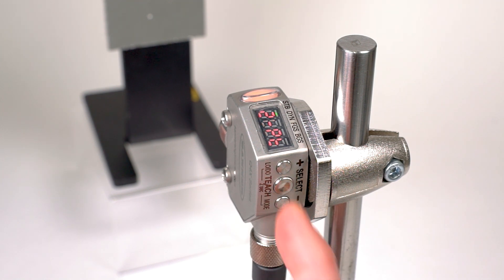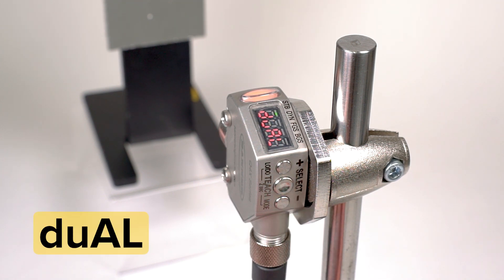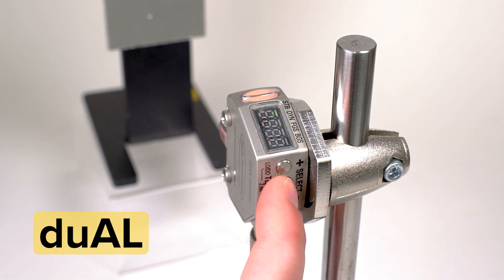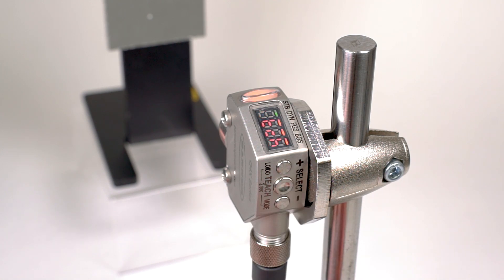Press the select button and use the plus and minus buttons to navigate through the options until you see dual, and press the select button again. The display will flash to confirm your selection and then return you to the main menu.